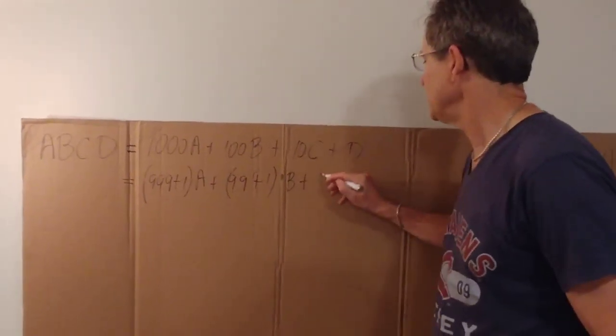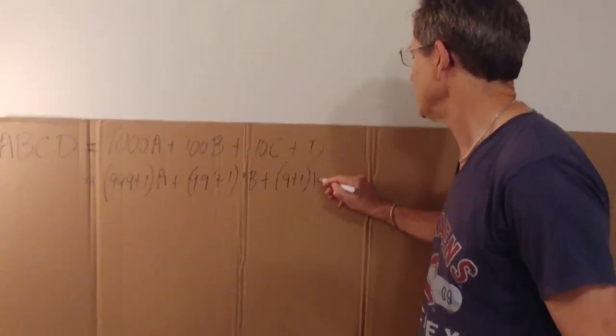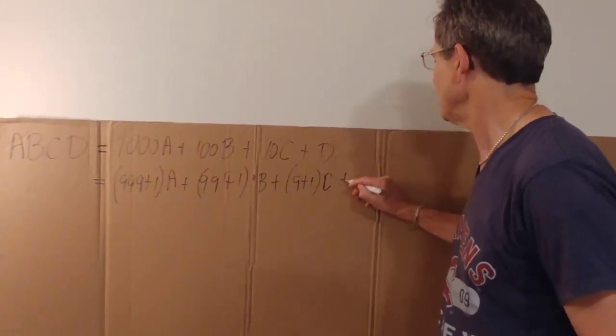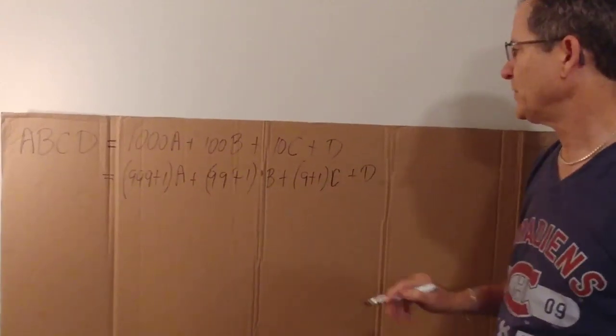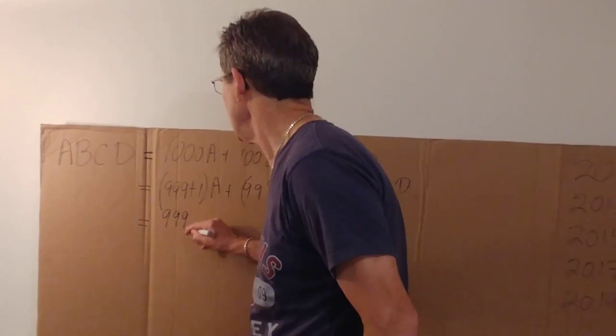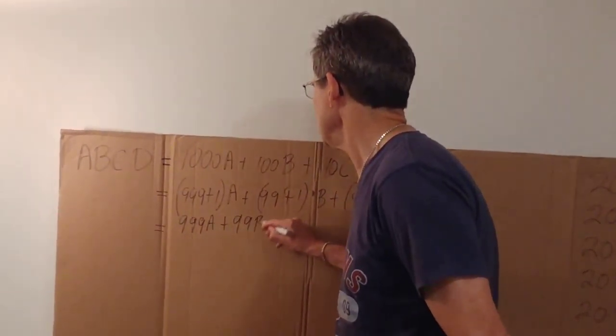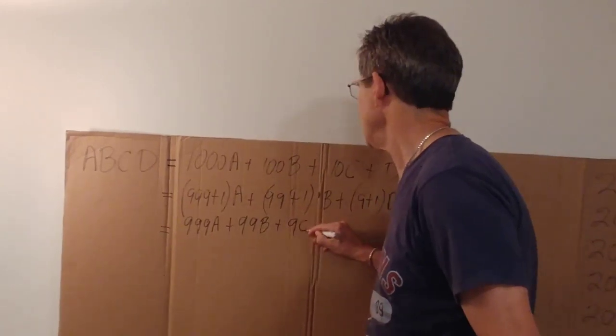and the 10 into 9 plus 1 times C plus the D. If I bring the terms with nines in them to the front, I get 999A plus 99B plus 9C